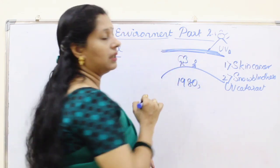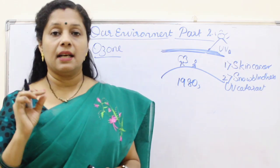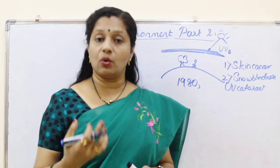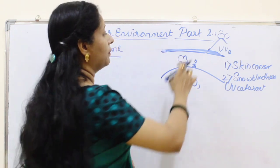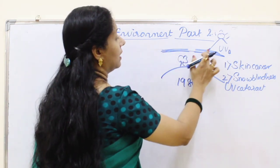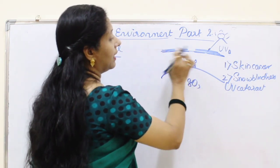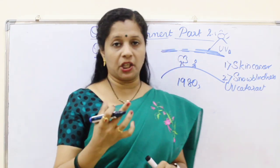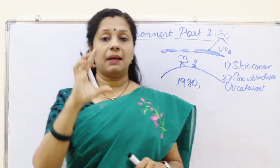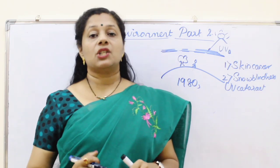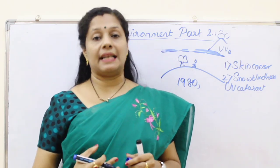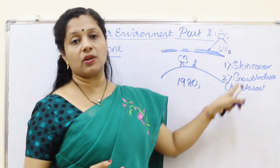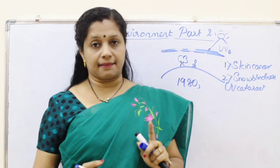Until the 1980s, the ozone layer was doing this very neatly. But in the 1980s, we found that an ozone hole was developing. Though we use the word ozone hole, there is no actual hole — it is a thinning of the ozone layer. Before this, the ozone layer was very thick, measured in a unit called a Dobson unit. Once it becomes thinner, the protection is less, and the harmful rays can reach the surface of earth and cause damage to living organisms.